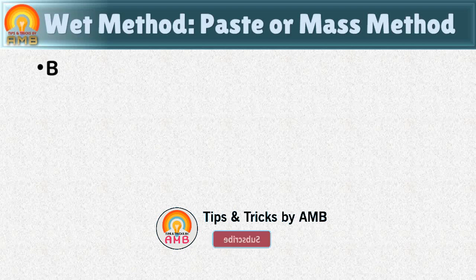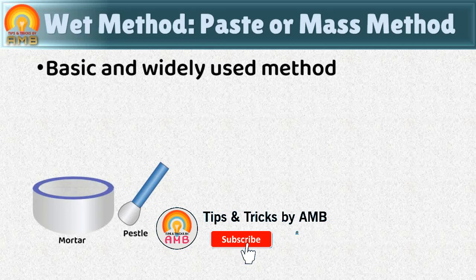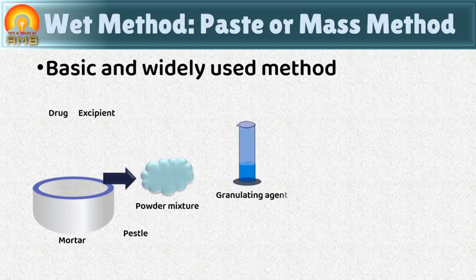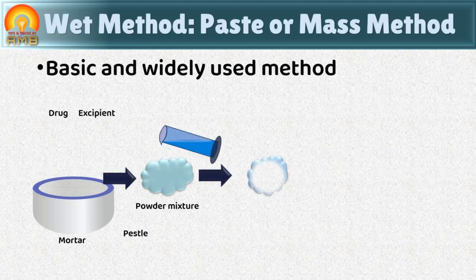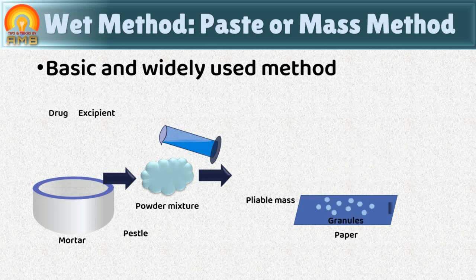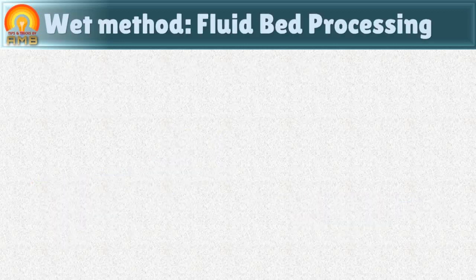The massing or mass method is one of the basic and widely used wet methods. In this method, the drug and excipients are mixed and the resulting powder mixture is moistened with a granulating agent to form a dough mass or paste. This mass or paste is passed through a screen or sieve of the desired mesh size to produce granules of the desired size. The granules are placed on drying trays and dried by air or under heat, and are periodically moved during drying to prevent adhesion into a large mass.